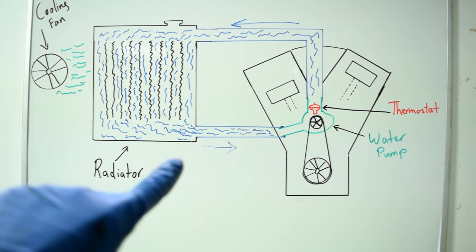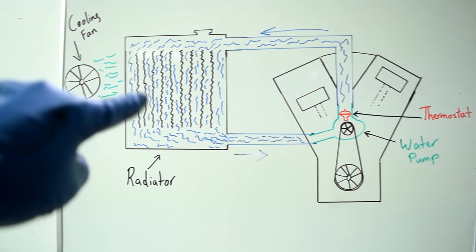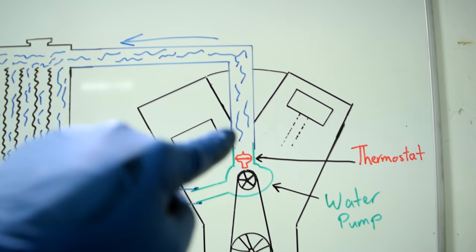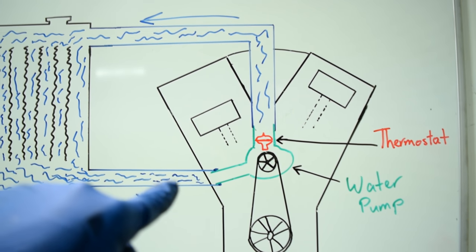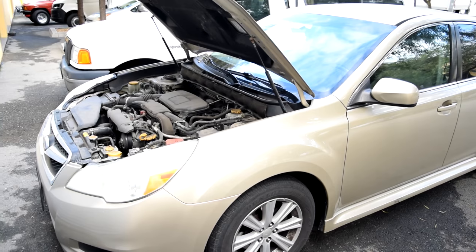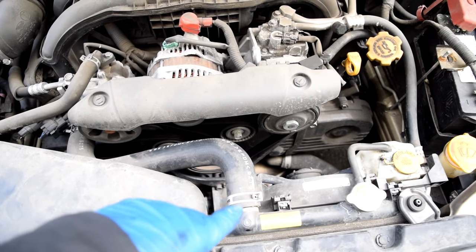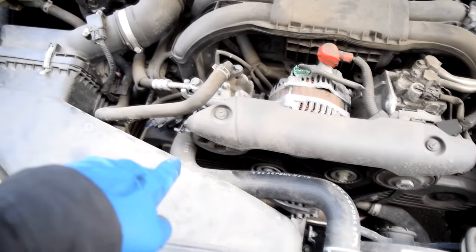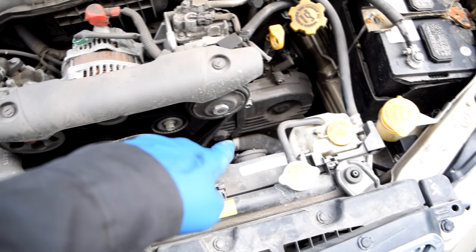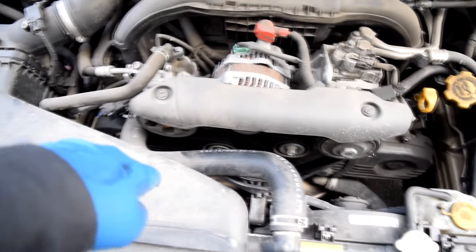Coolant doesn't always flow from the lower radiator hose through the engine to the upper radiator hose — sometimes it goes the other way around, and in that case your thermostat will be where the radiator hose goes to the engine. That's the case on this 2000 Subaru Legacy with a 2.5-liter engine. On this engine coolant flows from one side into the engine, and once the coolant is properly warm the thermostat opens, then it flows back through the radiator and the whole cycle repeats.